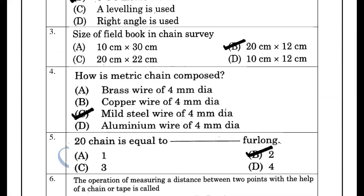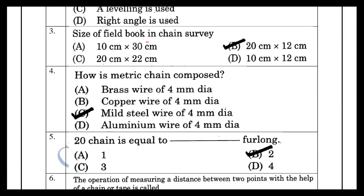Next, the size of the field book in chain survey. In chain survey, values and measurements are noted using a field book. The size of the book is 20 cm x 12 cm. The chain line is represented as a double line for large work, and a single line book is also used.